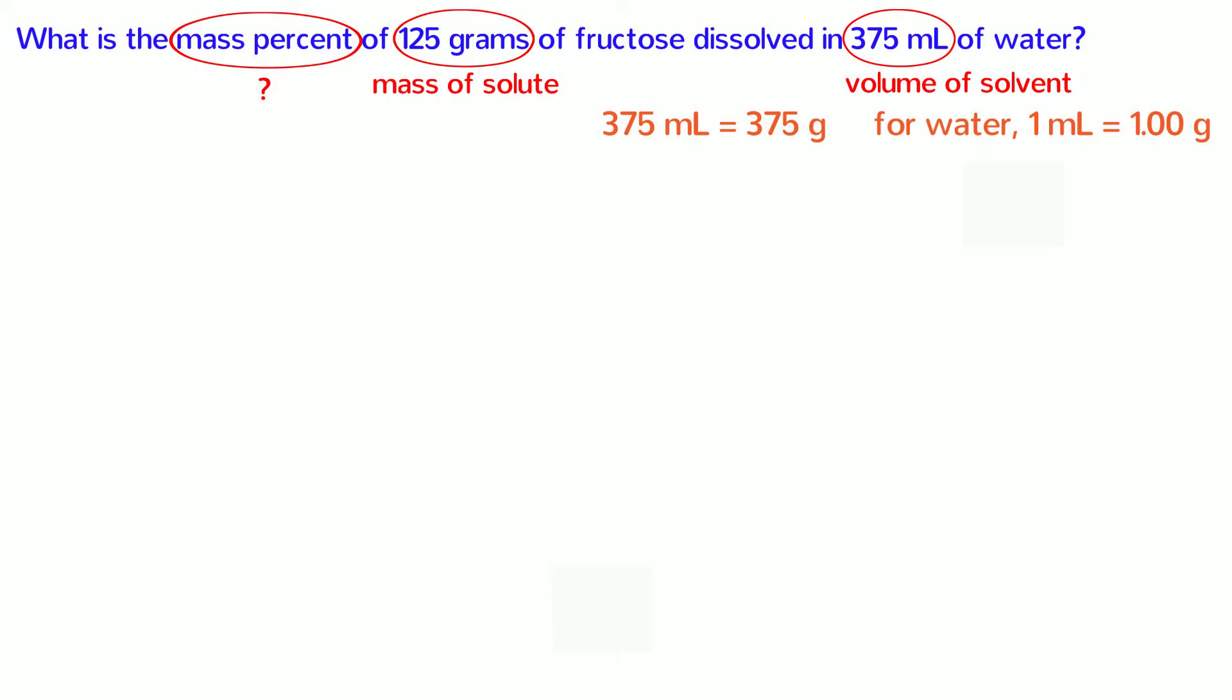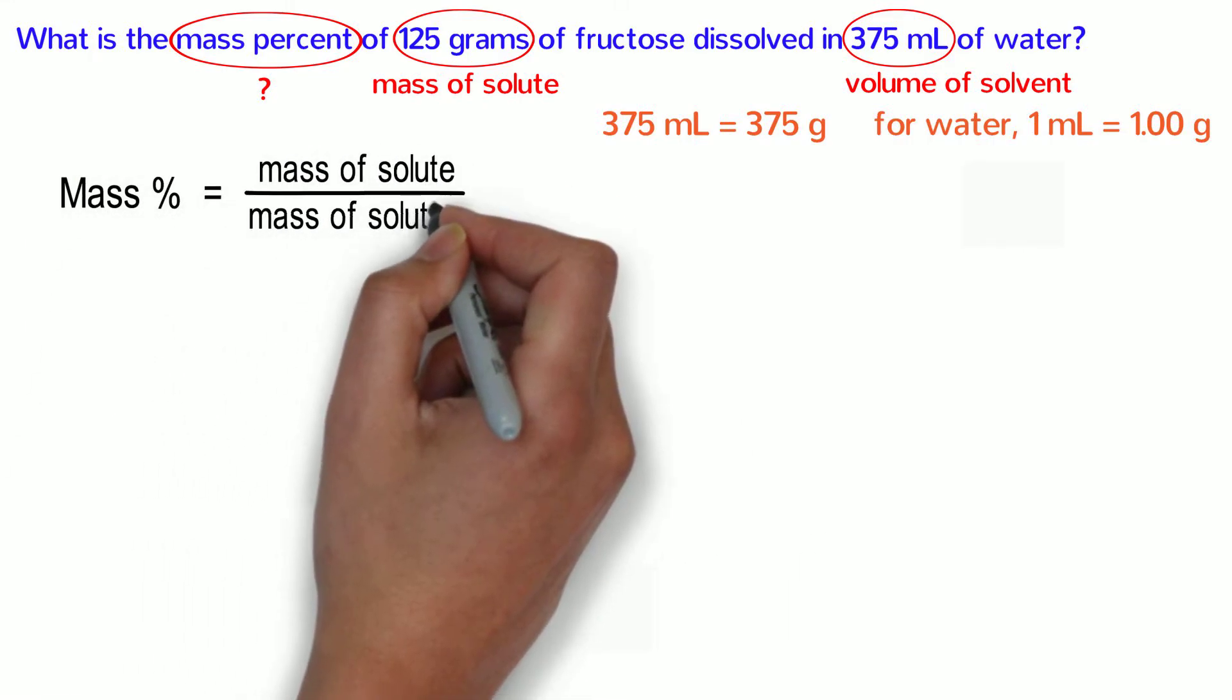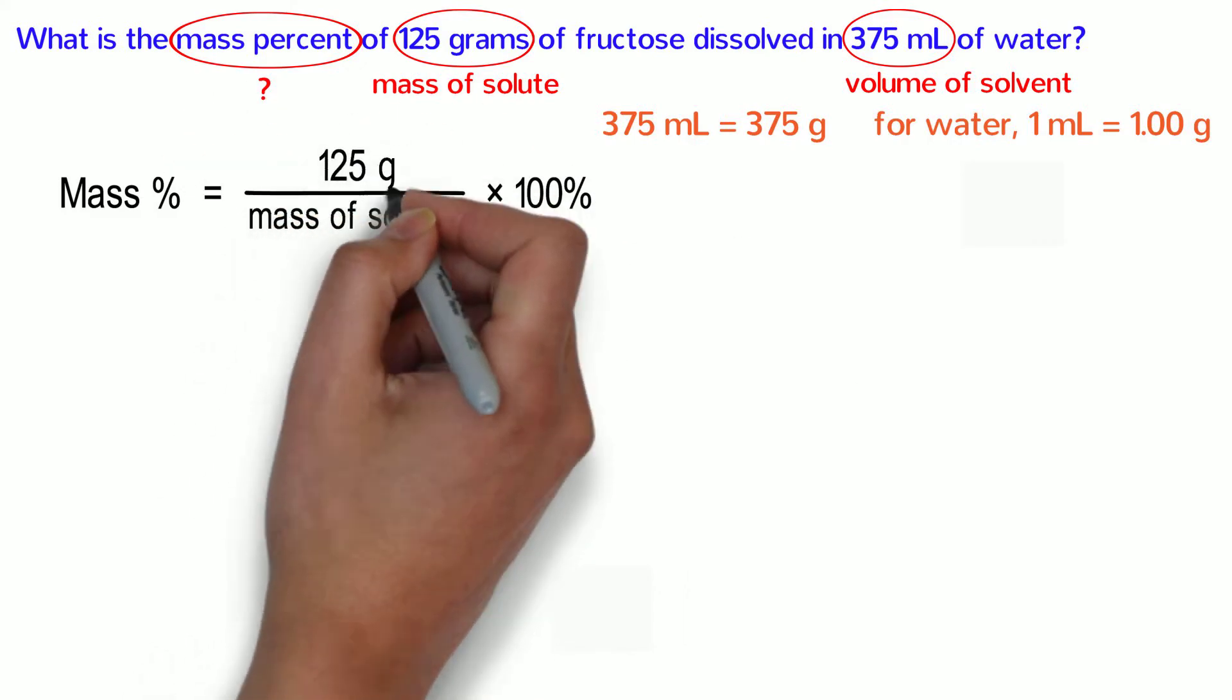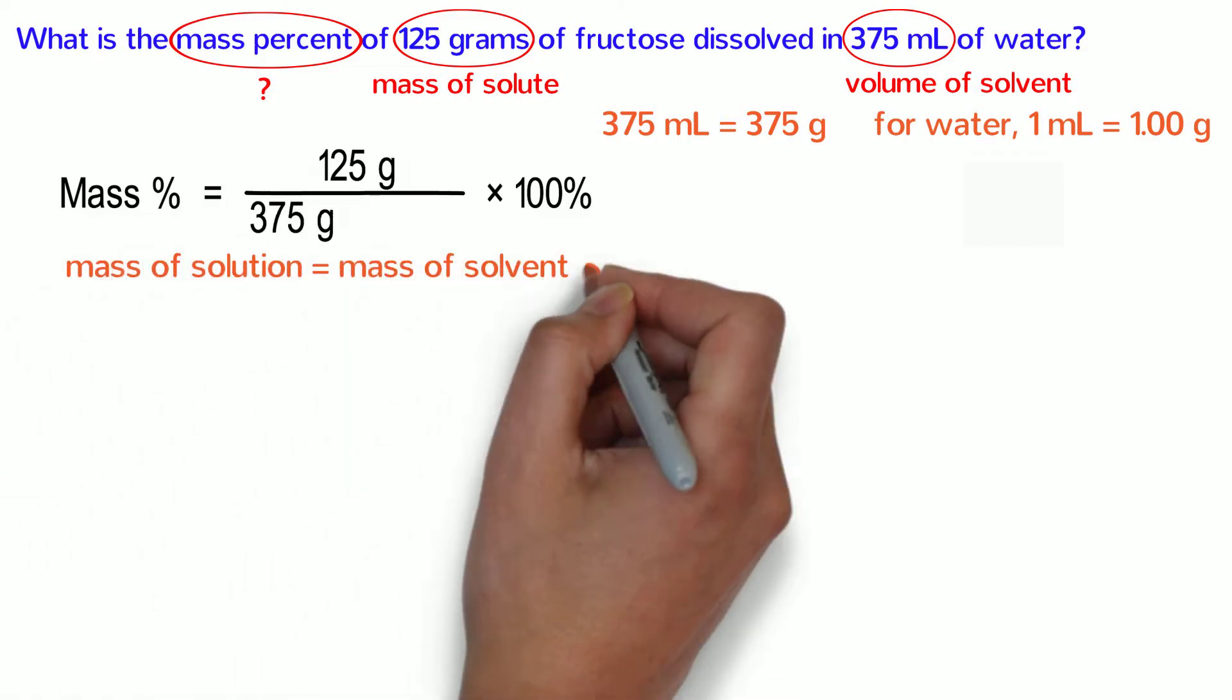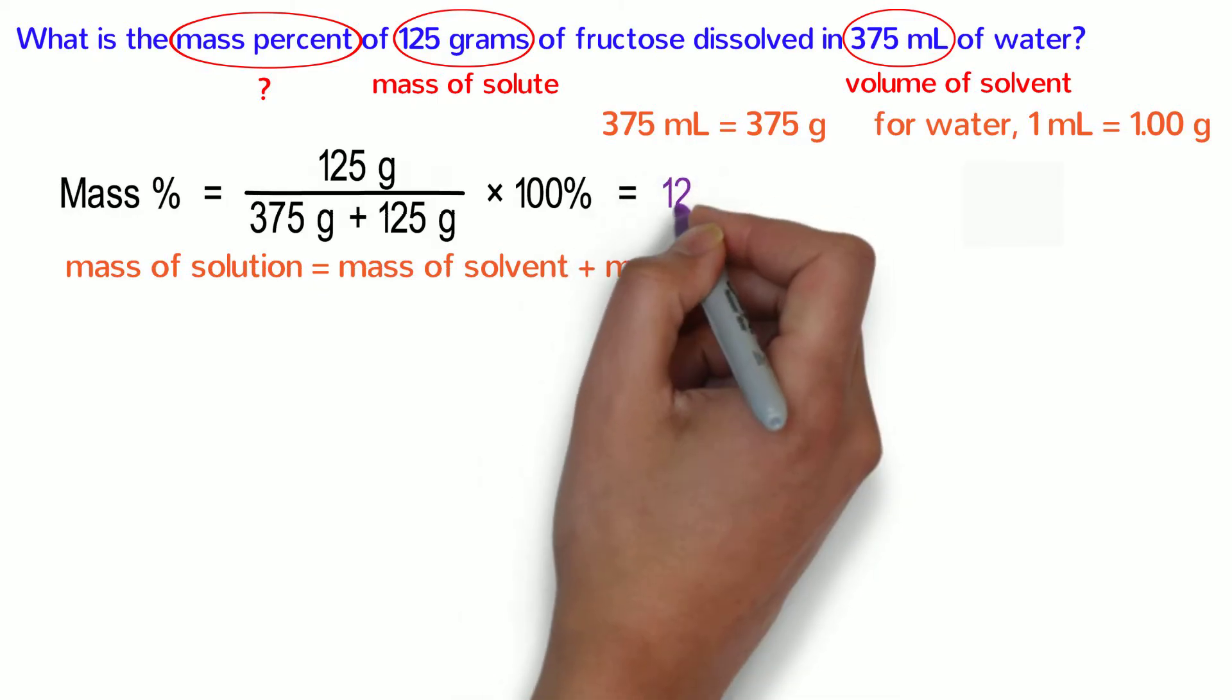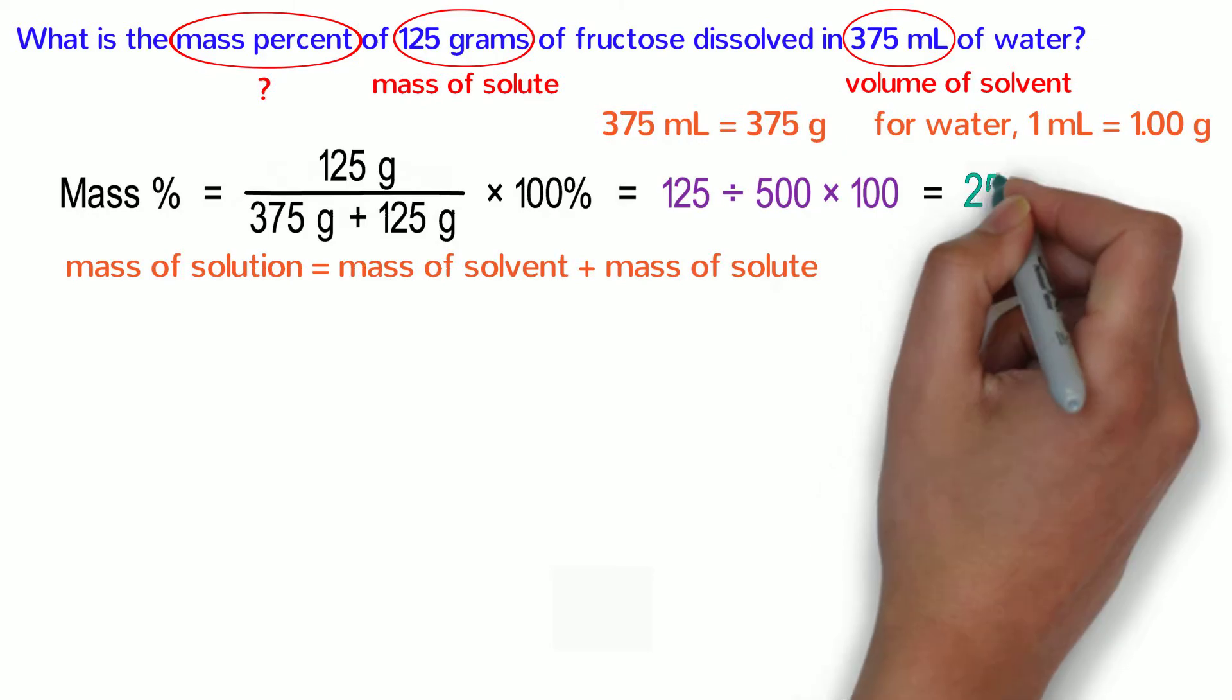Now we can plug in some numbers. The mass percent is equal to the mass of the solute divided by the mass of the solution, all times 100%. We put 125 grams in for the mass of the solute. You may be tempted to put 375 grams in the bottom, but that is only the mass of the solvent. The mass of the solution is the mass of the solvent plus the mass of the solute. That is 375 plus 125. That works out to be 125 divided by 500 times 100 or 25%.